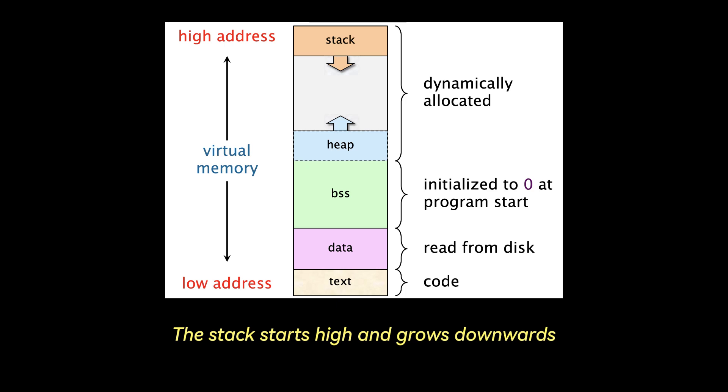The stack starts high and grows downwards, which means that the stack typically starts at a high memory address and grows down towards lower addresses each time new local variables or function calls are added. Each time a function is called, a new stack frame is pushed onto the stack with local variables, function arguments, etc.